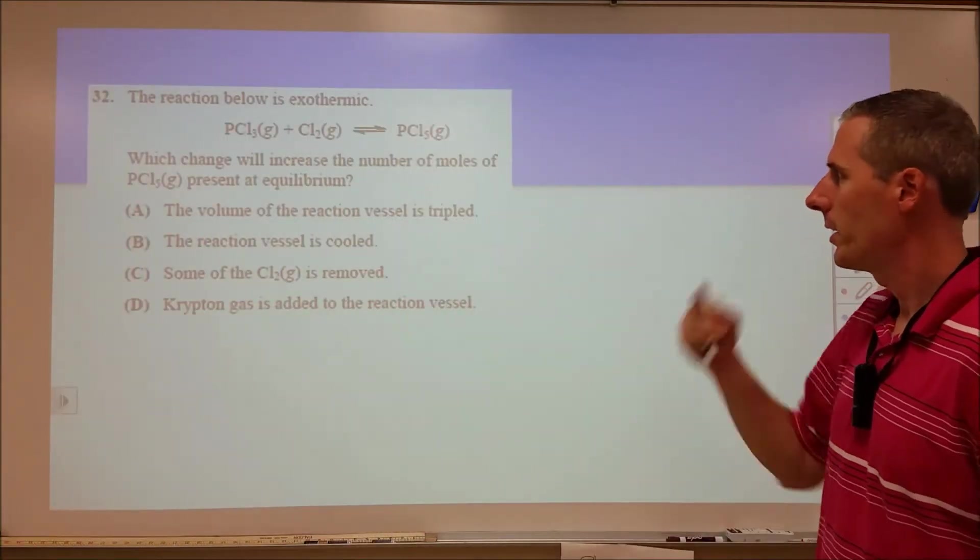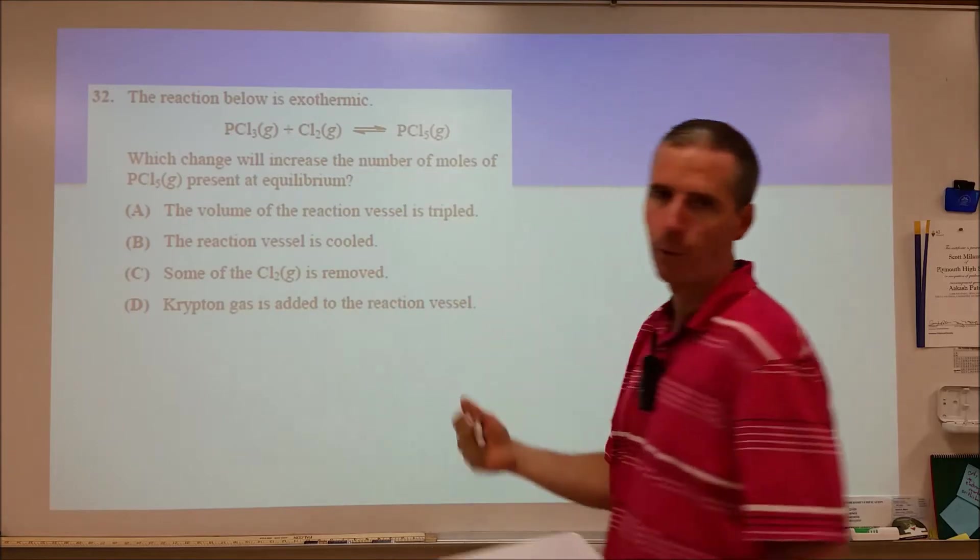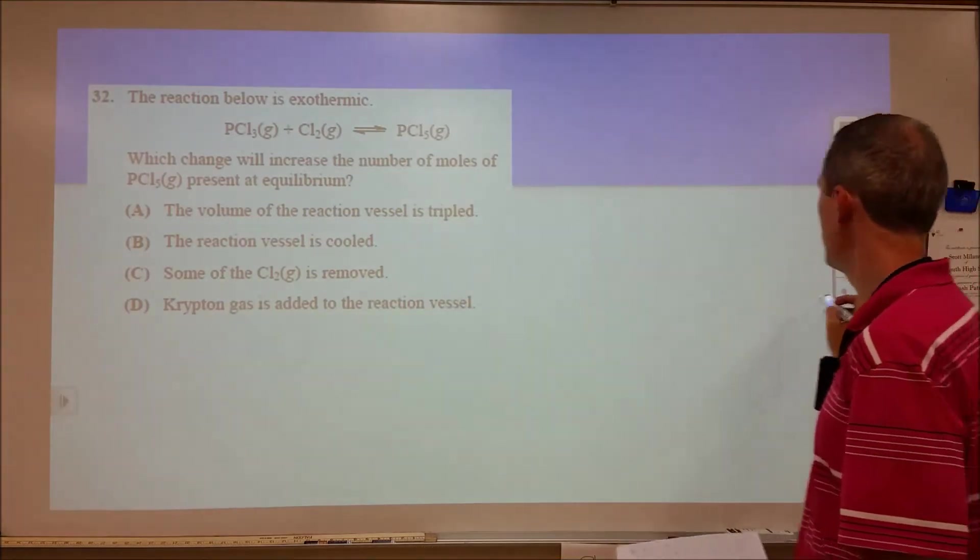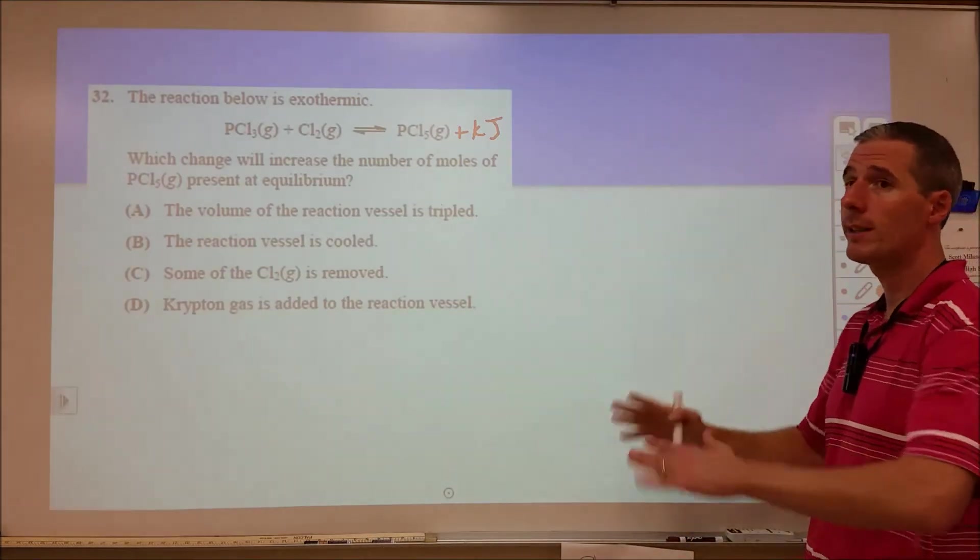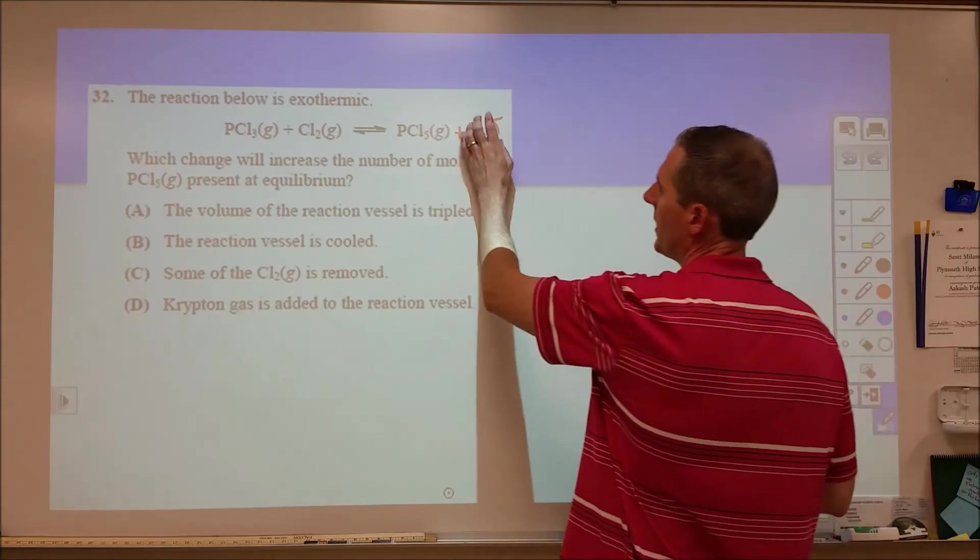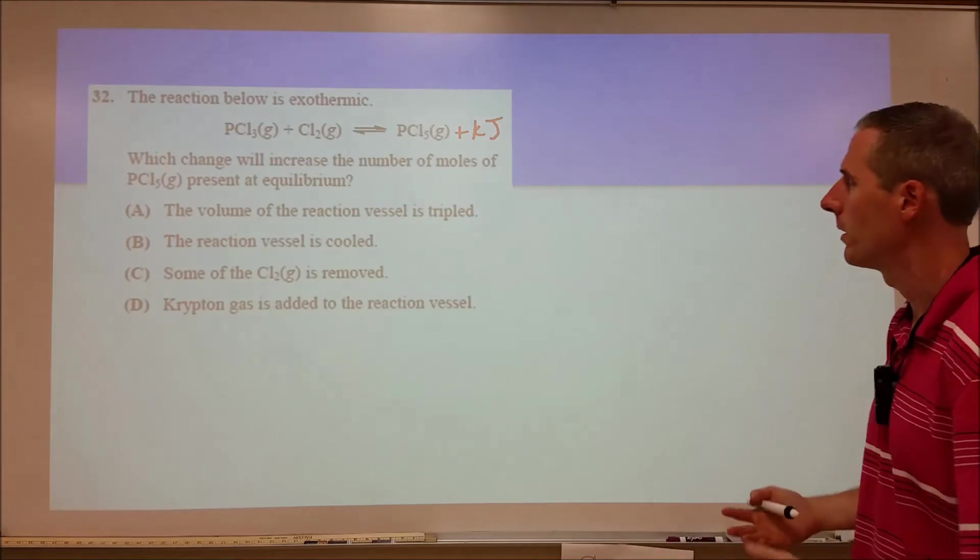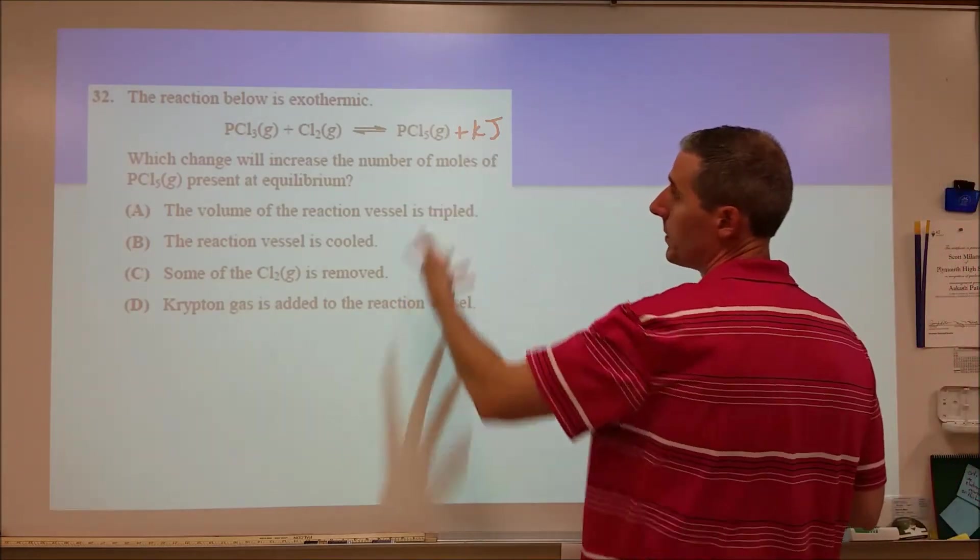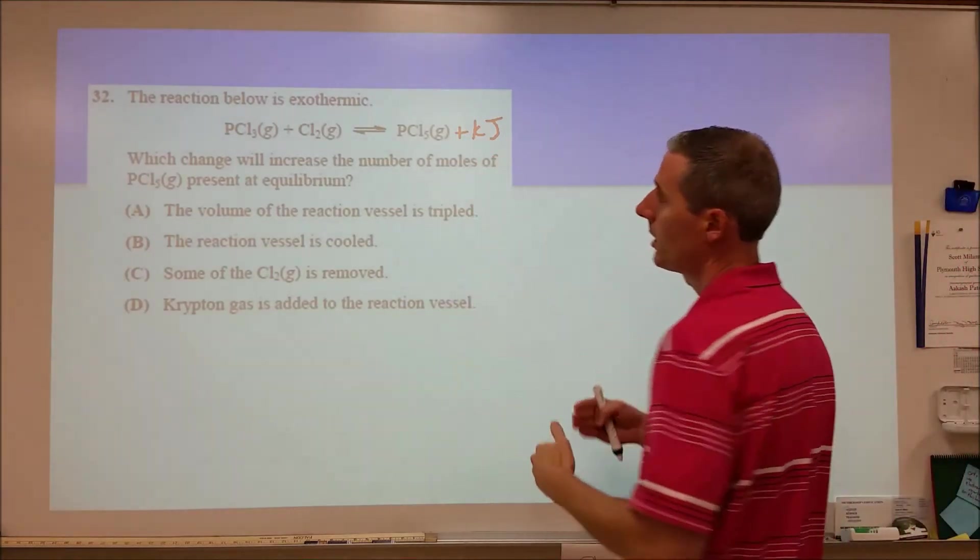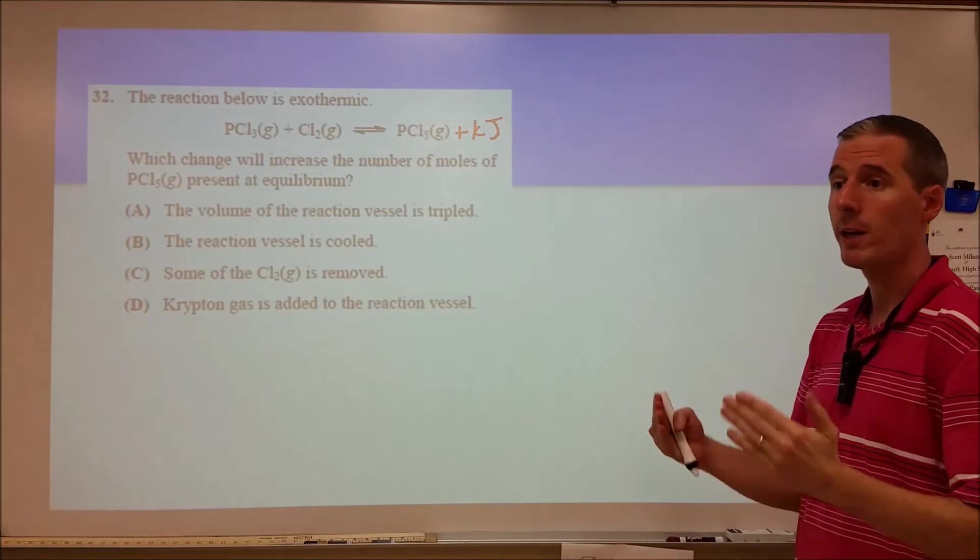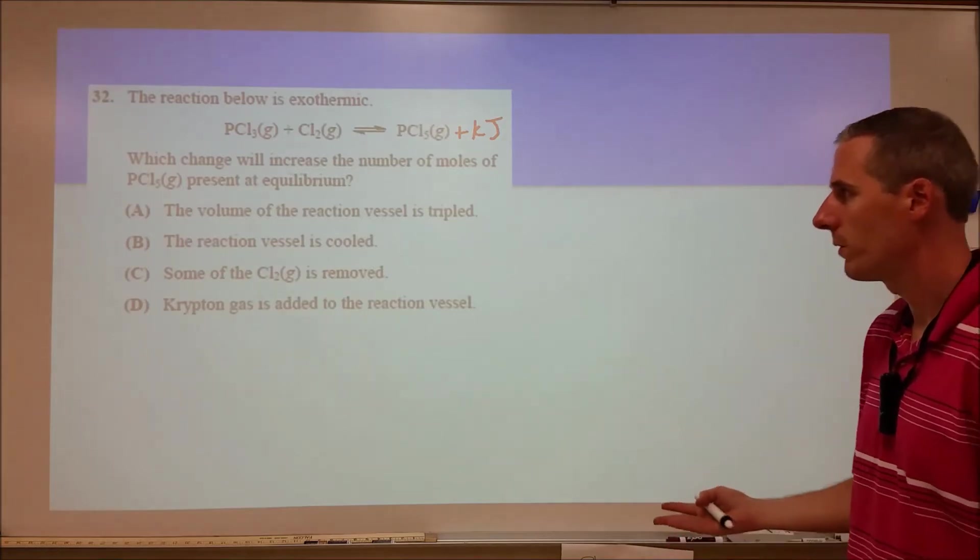In problem 32, the easiest way to do this is with Le Chatelier's principle. We know the reaction is exothermic. For exothermic reactions, one of the things I like to do is add an energy term and treat that as a product or reactant. Really, it's not that I've added energy and caused a shift because of some feelings hurt, but rather this gives me a simple way to make that prediction. It's kind of a shortcut. In reality, changing the temperature speeds up the reaction rates for the forward and reverse unevenly, and it's going to affect it in a way that causes that shift anyways.